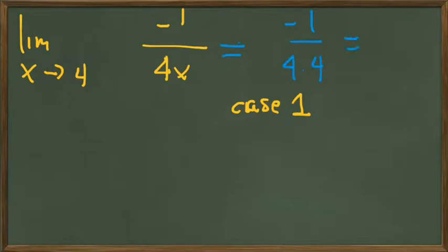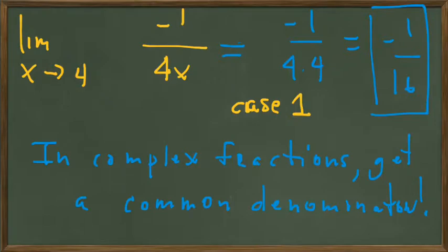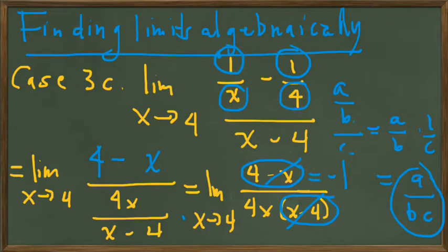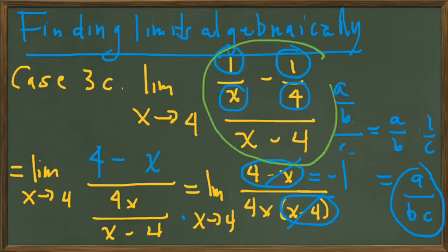or a result of minus 1 over 16. And so we want to characterize this third type as getting a common denominator when we have a complex fraction, as we did in this case. Our original problem was a complex fraction, and we got a common denominator in its numerator.